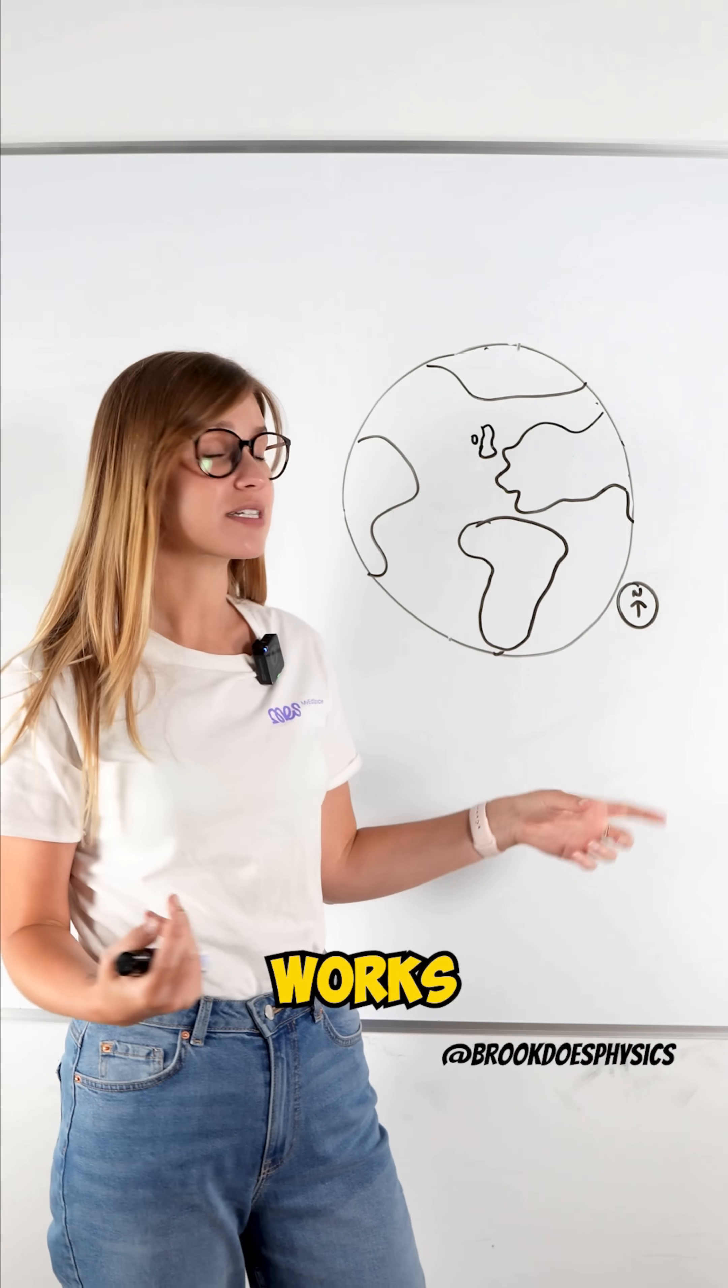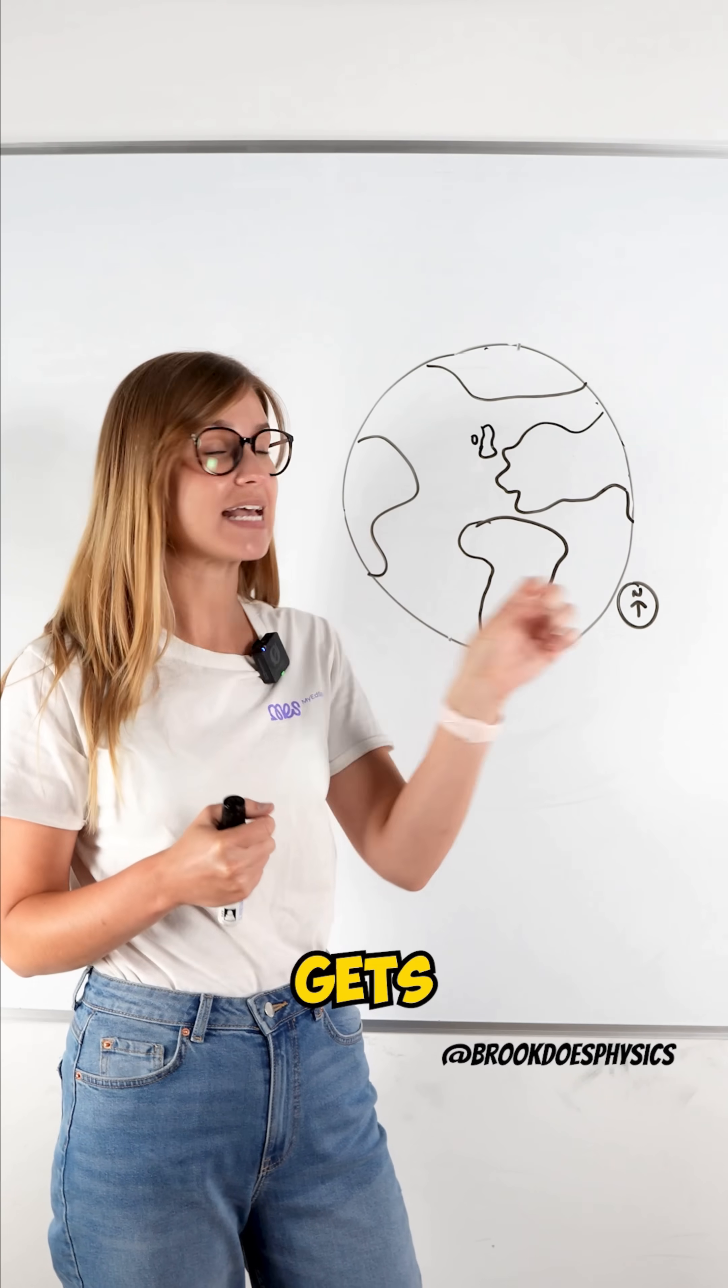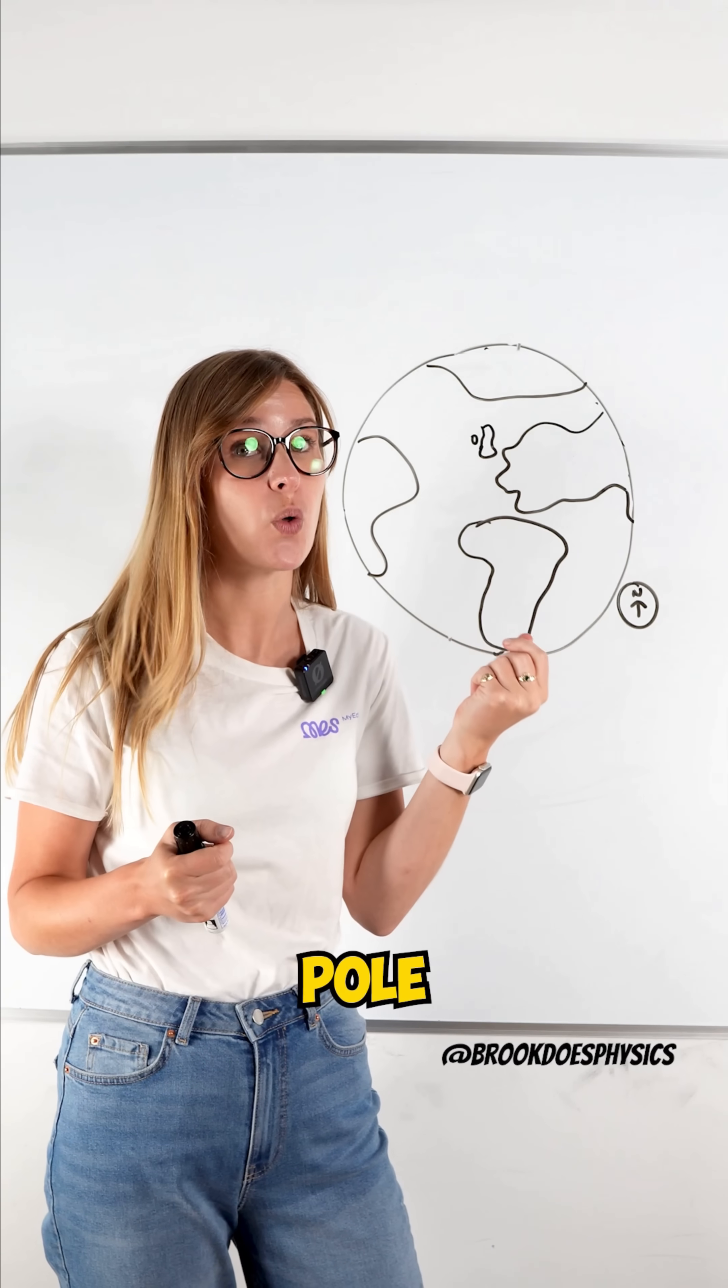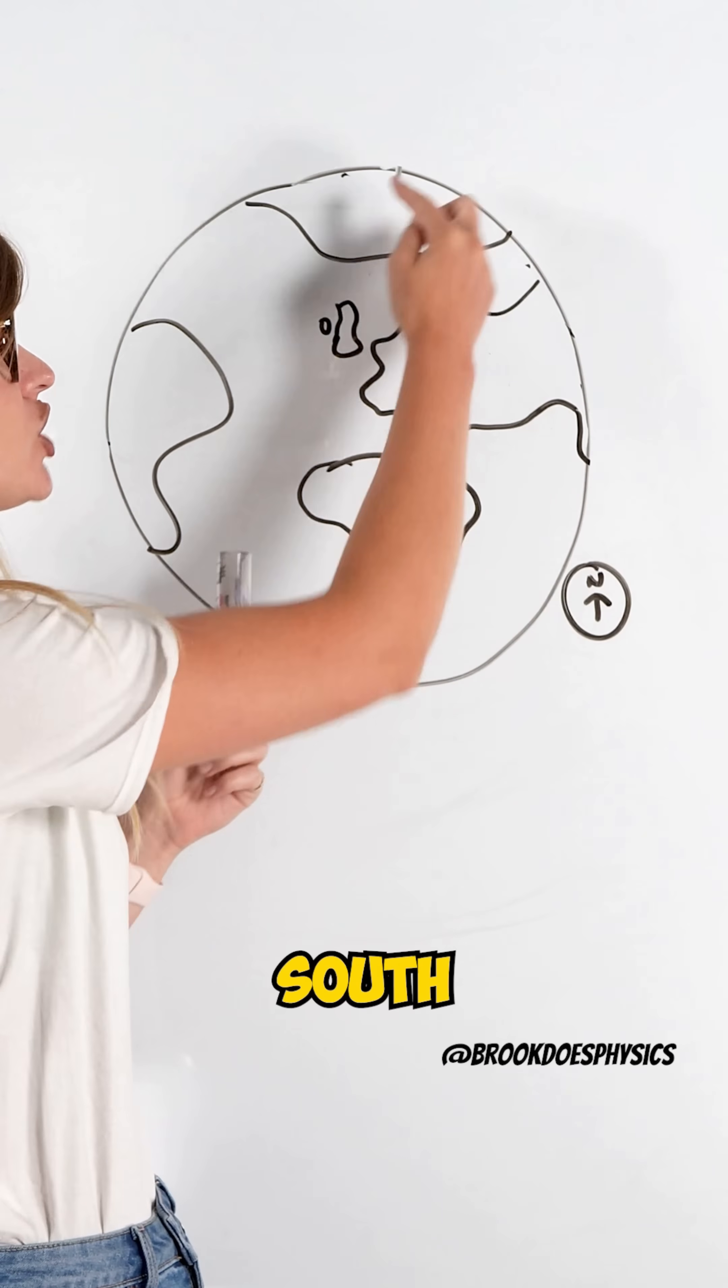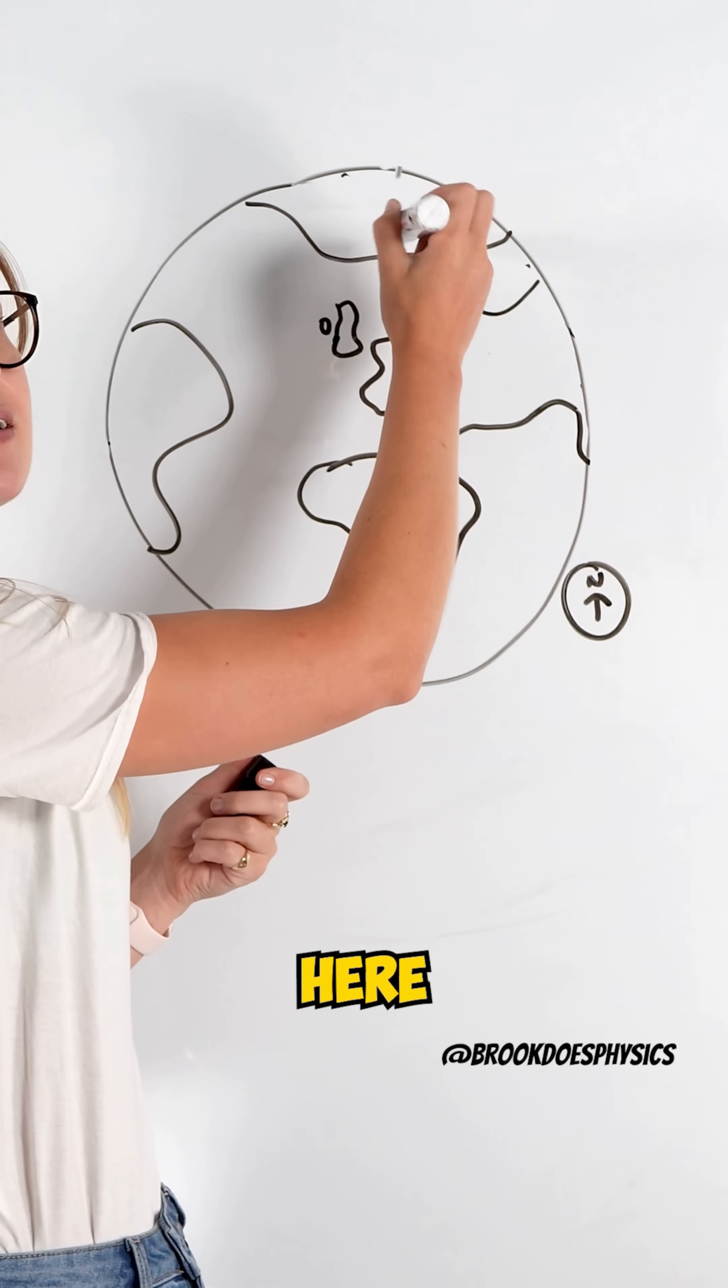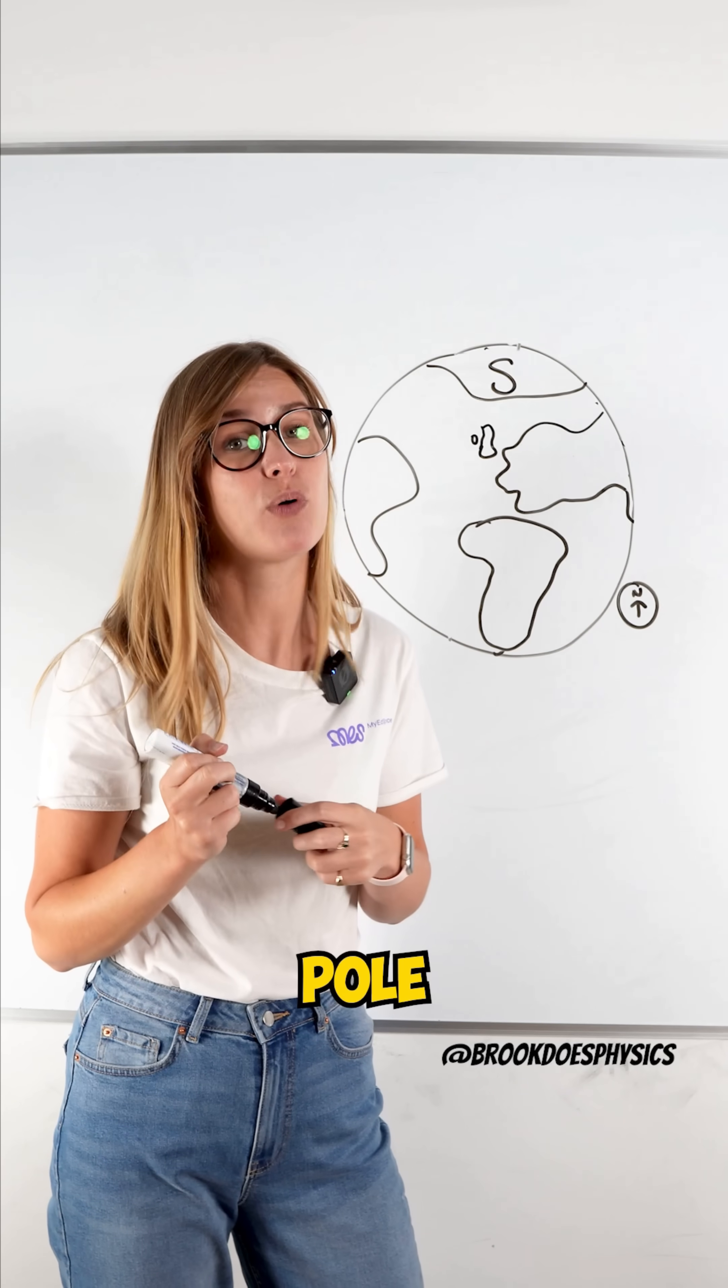And how that works is that the compass, the north pole of that compass, gets attracted to the Earth's south pole. So because the north pole of the compass is attracted to the south pole, what we call up here is actually the south magnetic pole.